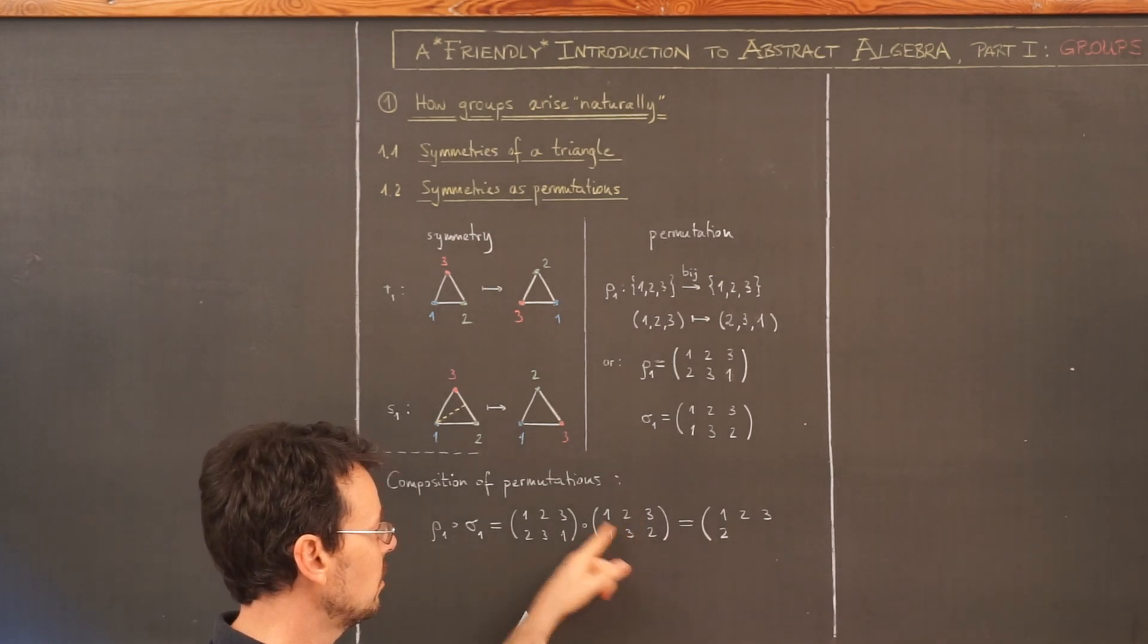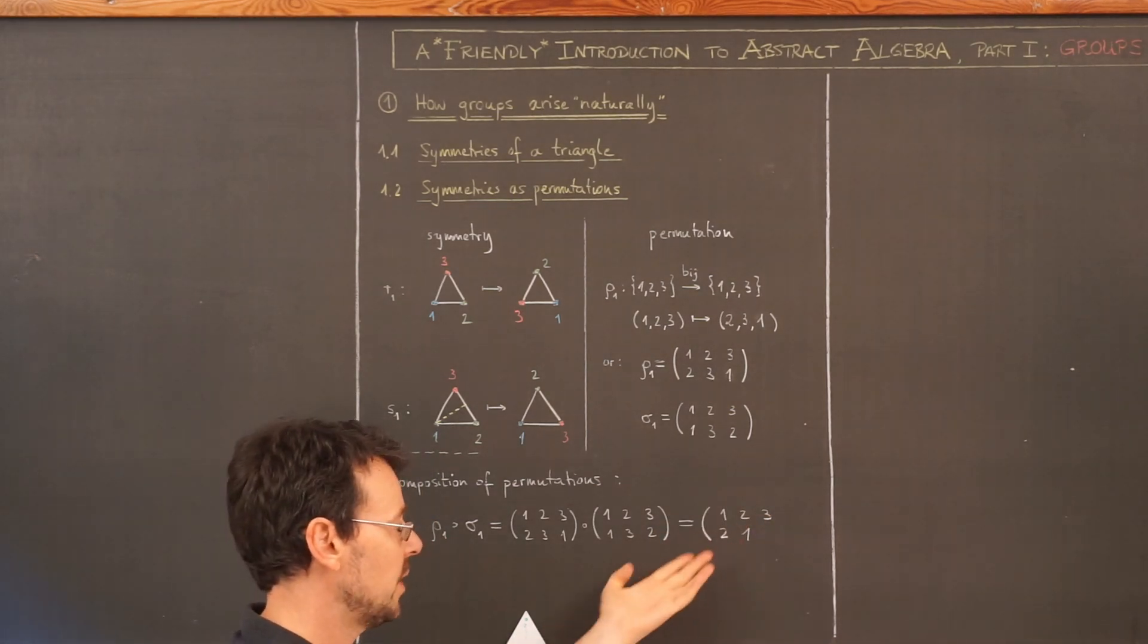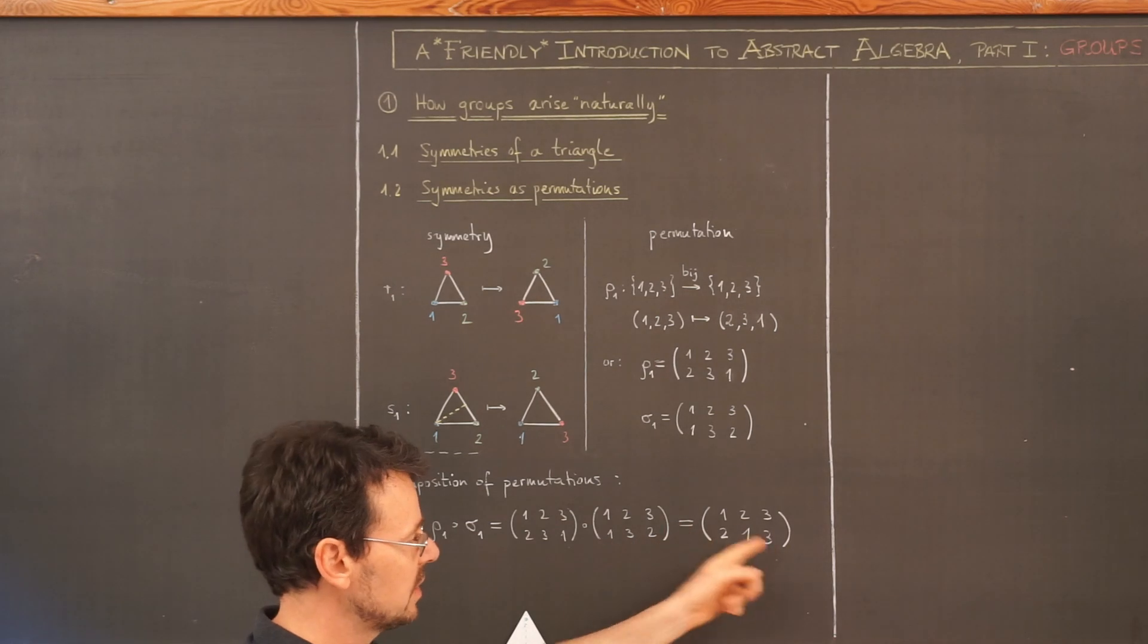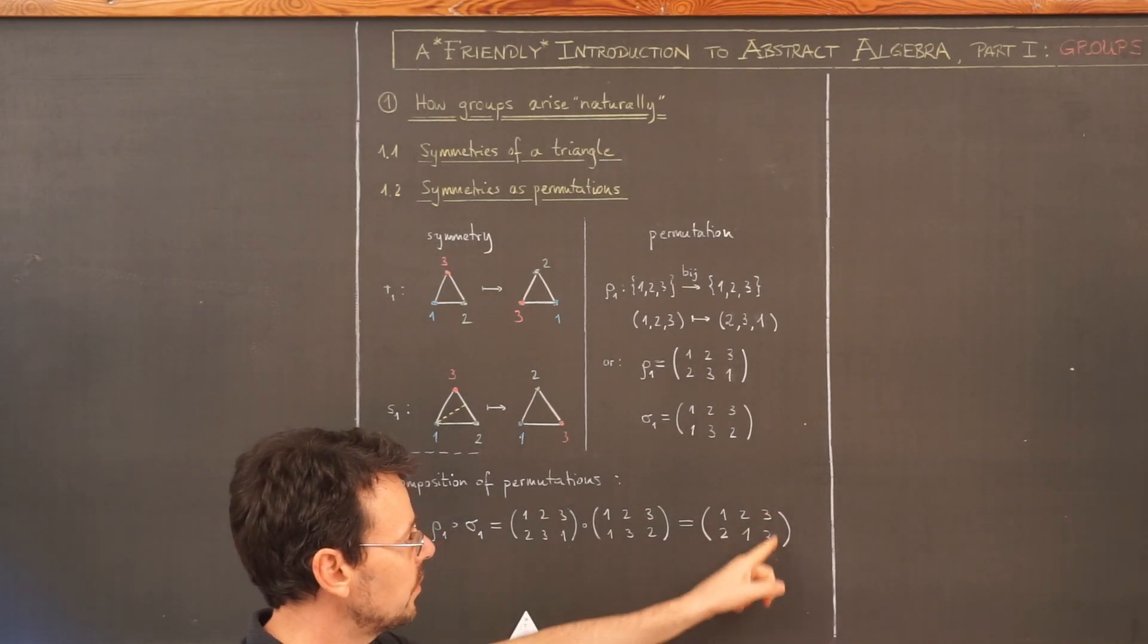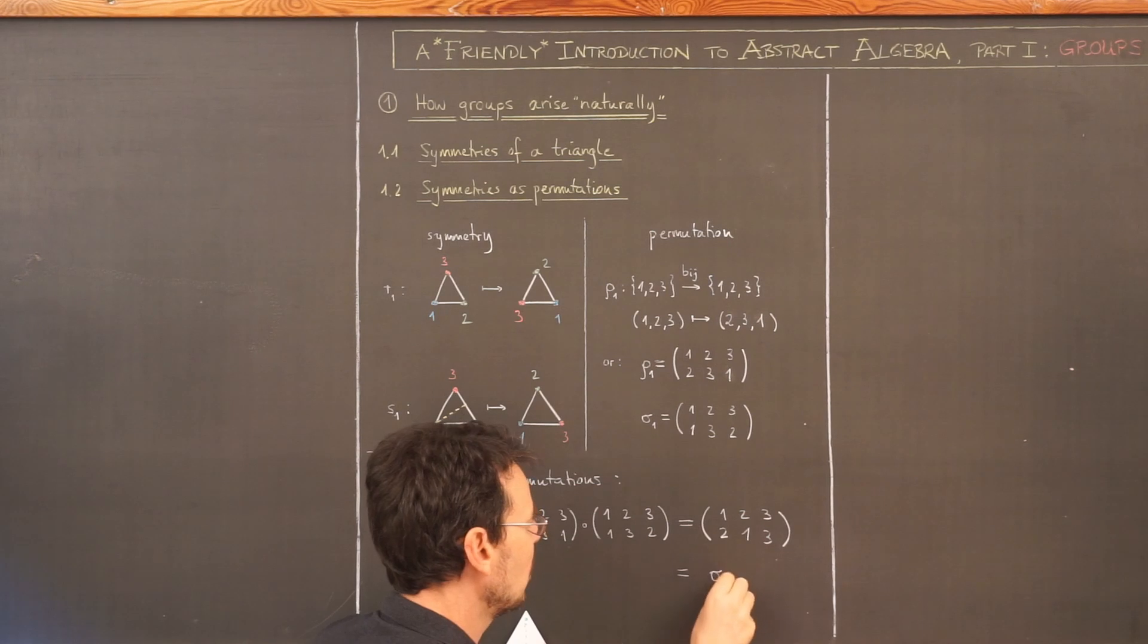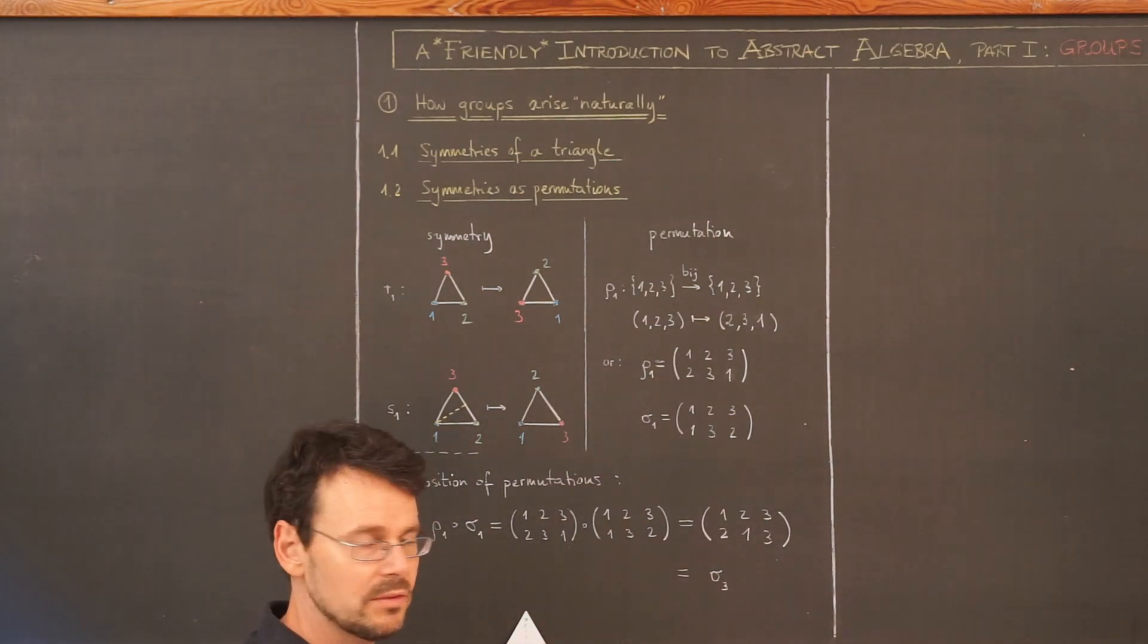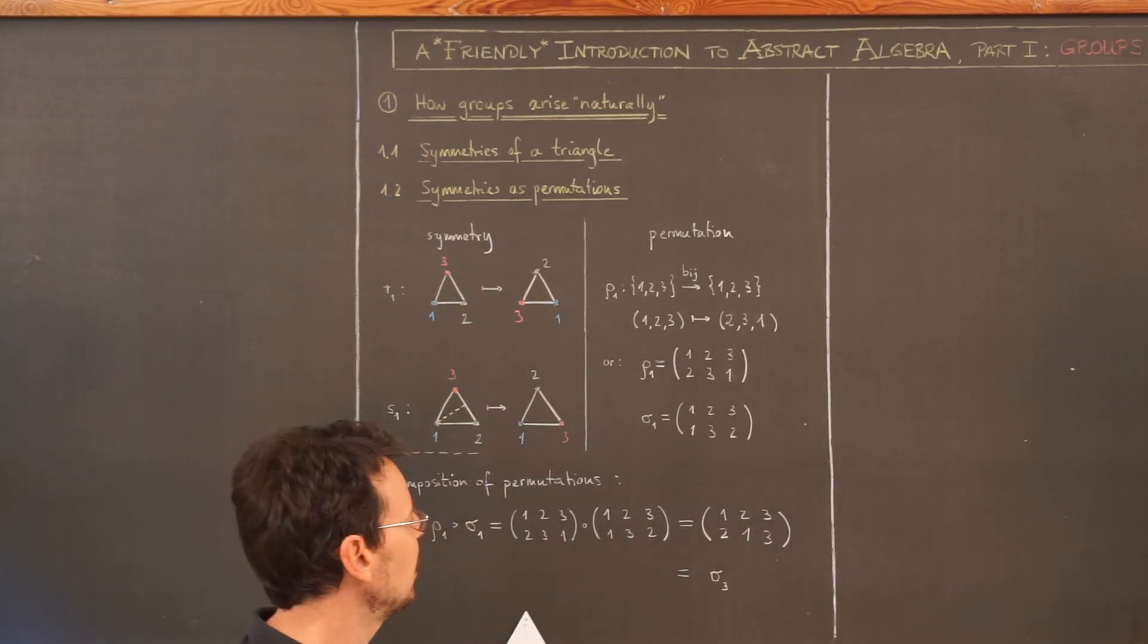2 gets mapped to 3, 3 gets mapped to 1, so we end up with 1. And now here must be a 3, because we want to have a bijective map. So 3 goes to 2, 2 goes to 3. All right, so we have another permutation. And now if we translate this back into this geometric setting, we see this is the symmetry where vertex 3 does not get moved. So this here is nothing but the reflection about the axis that goes through vertex 3, which simply interchanges 1 and 2.